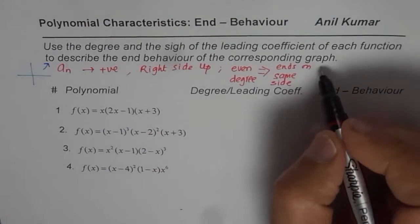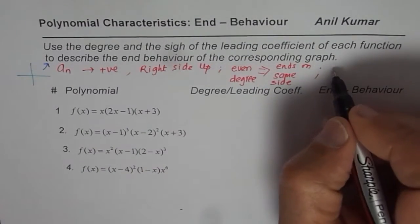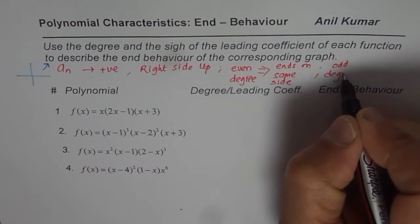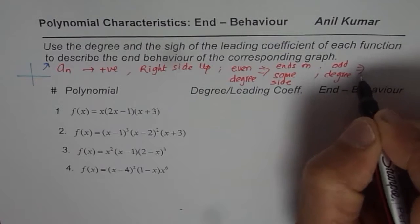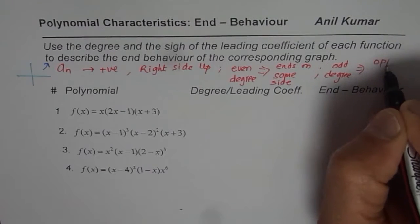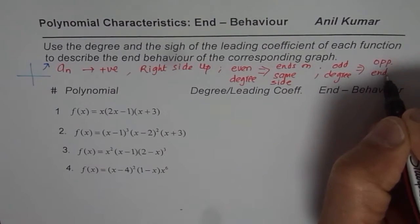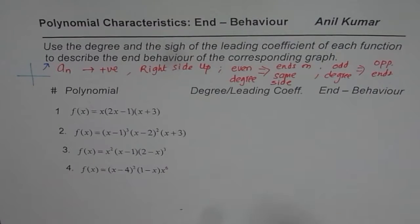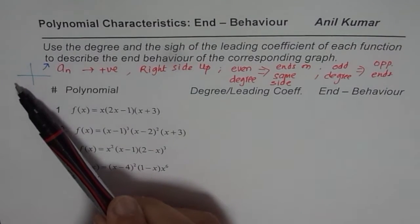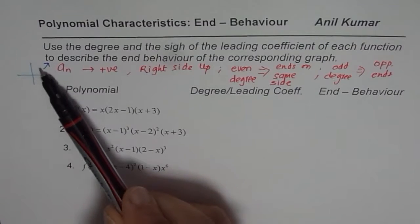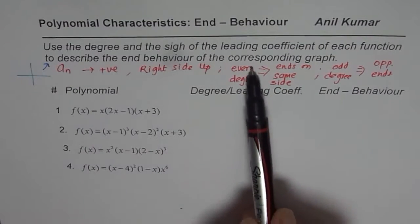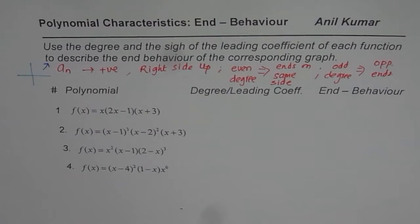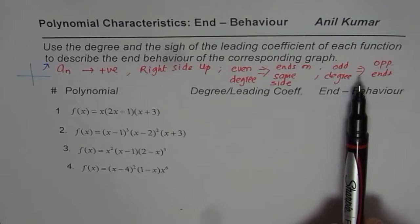If we have an odd degree function, we are looking for opposite ends. The graph moves from the third quadrant to the first — opposite ends. For even degree it's the same: quadrant 2 to quadrant 1. That is what we have learned so far.